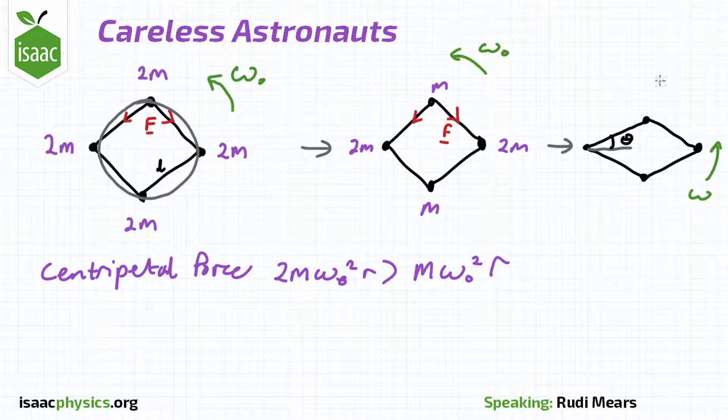that the tension on the ropes is t, that the astronaut of mass m rotates at big omega, and that the astronaut of mass 2m rotates at little omega.